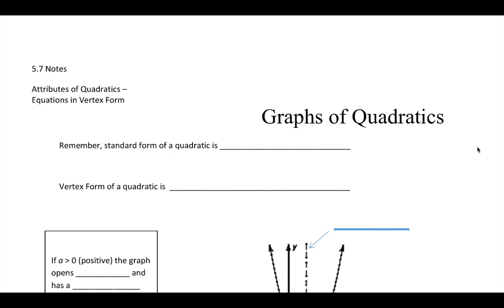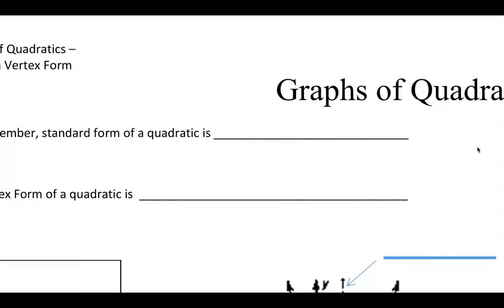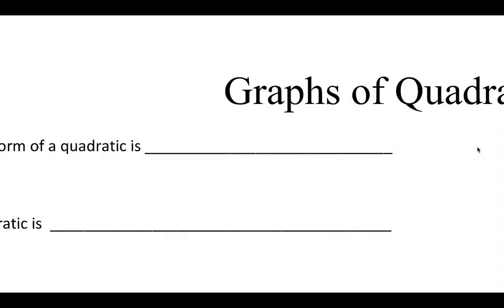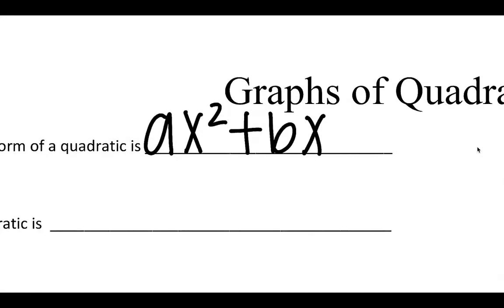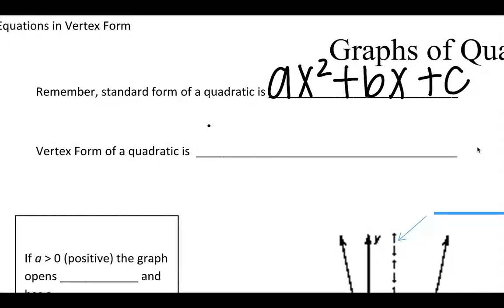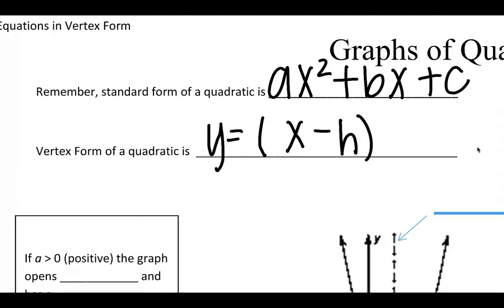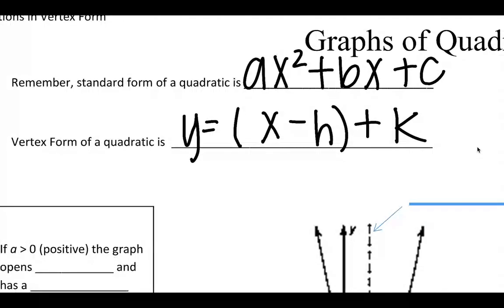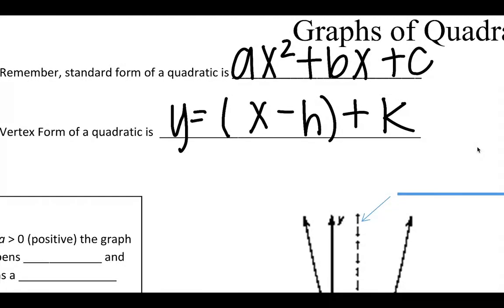Hey guys, today we're moving on to attributes of quadratics in vertex form. Yesterday we talked about standard form, which is what we did when we were factoring, and standard form looks like ax squared plus bx plus c. Today I'm going to give you it in vertex form. Vertex form is going to look like y equals x minus h — or plus h — plus k. This sign might change to a plus or a minus, but that's the form.